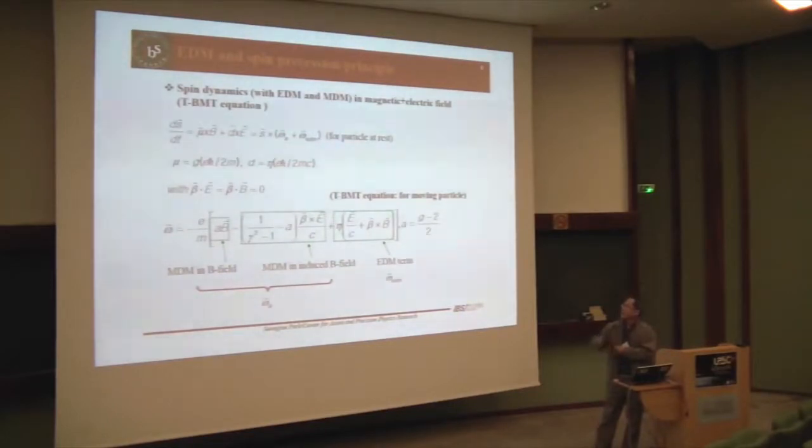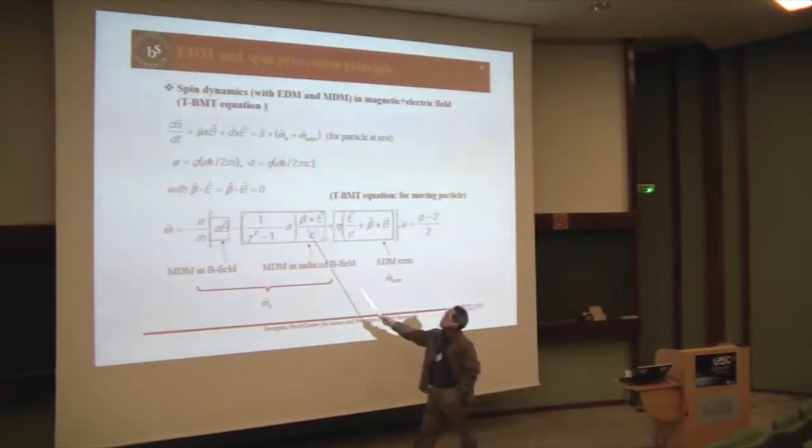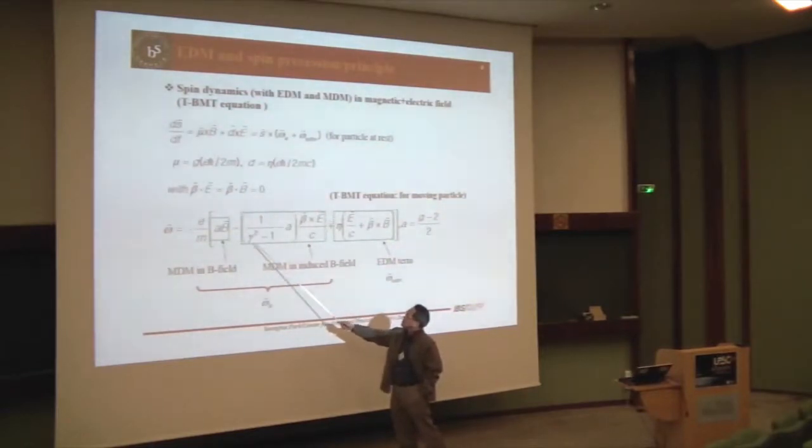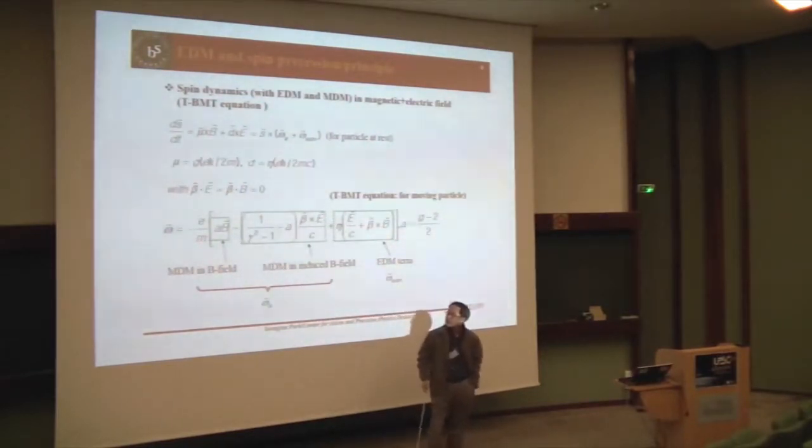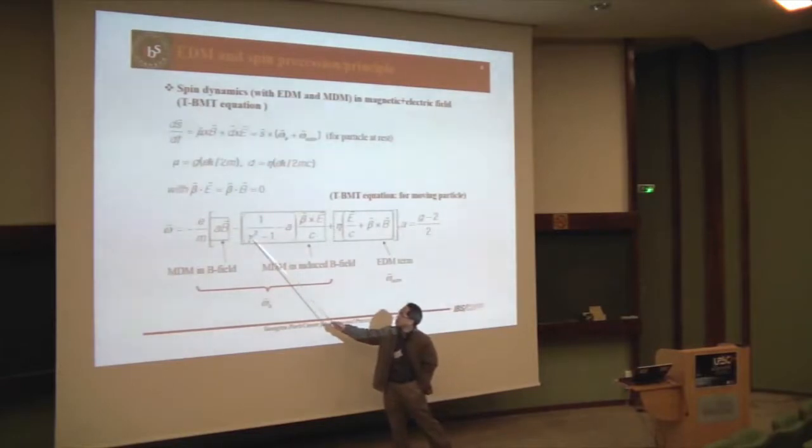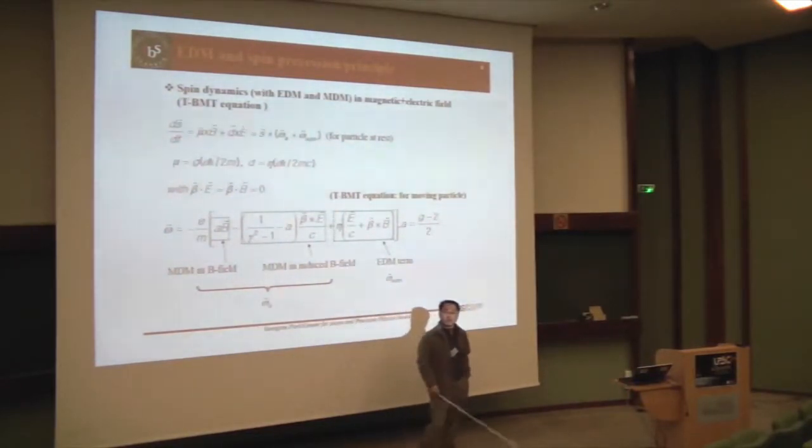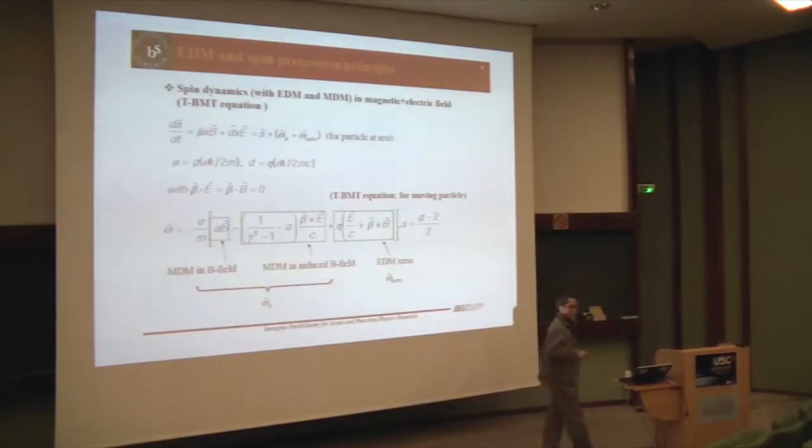But there remains two more terms. But you can, again, you can make this formula more simple. If you can have a chance to remove this one, you can do it. This is going with the Lorentz factor. If you choose the Lorentz factor, this one also can be a zero. Then all the remaining term is this one.